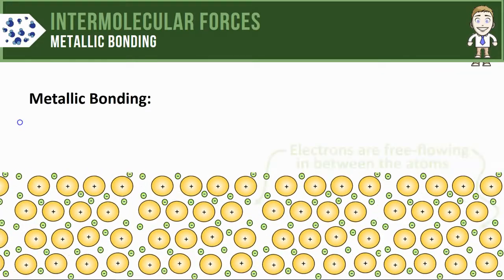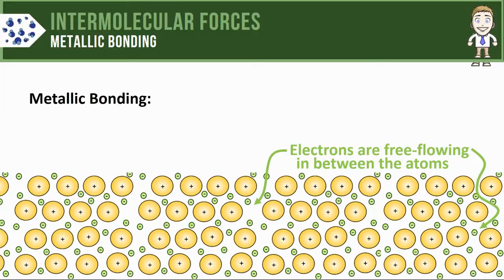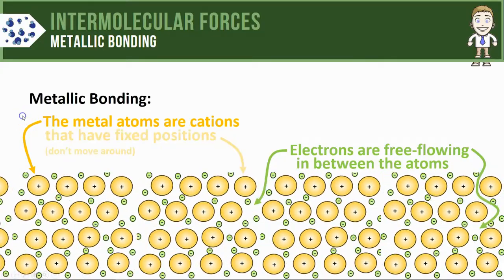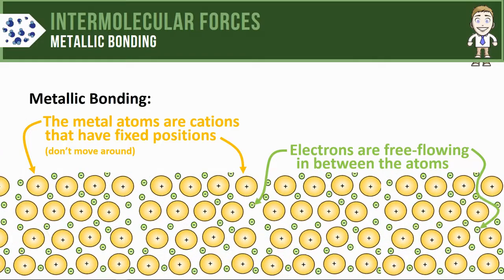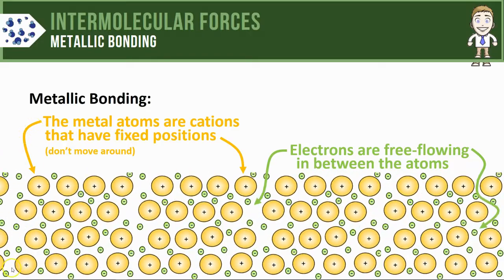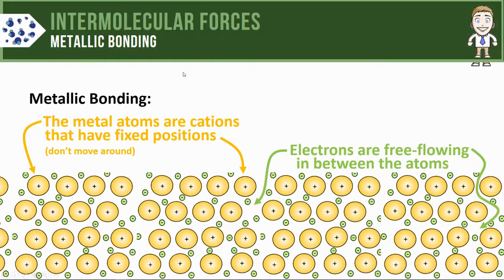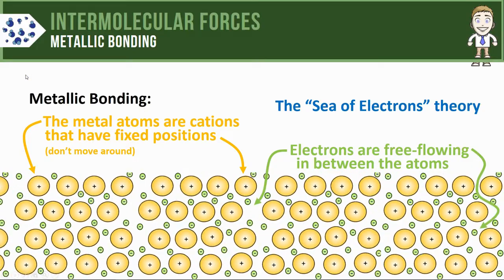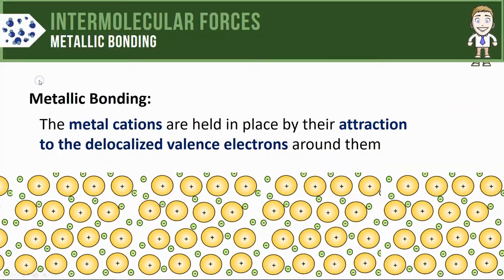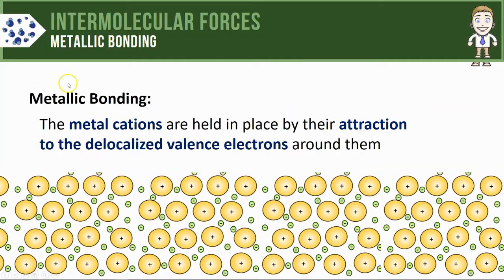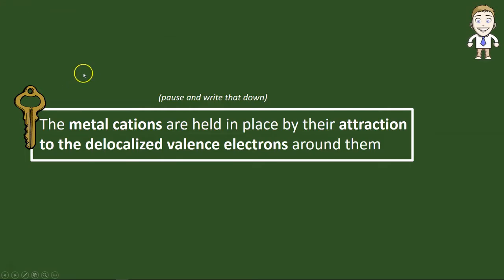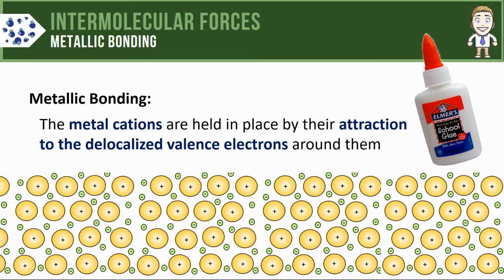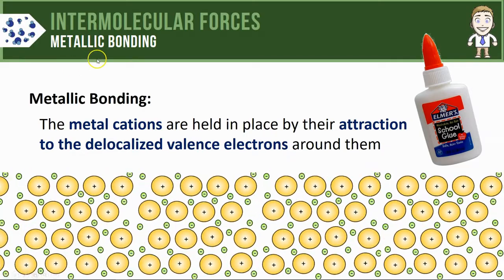Let's label the key features of the model. The electrons are now free-flowing between the atoms in the sample. The metal atoms have become cations — positively charged — and they have fixed positions, meaning they do not move. Only the delocalized electrons are free to move. Because those electrons flow freely within the sample, this is often called the sea of electrons theory. The metal cations are held in place by their attraction to those delocalized valence electrons that surround them.